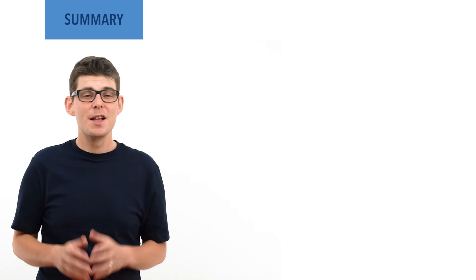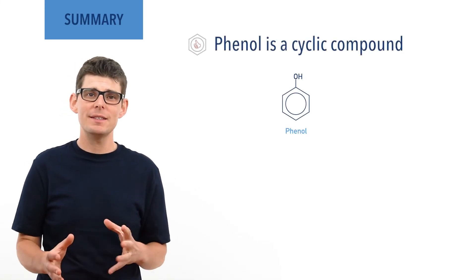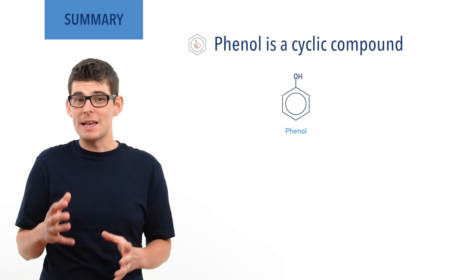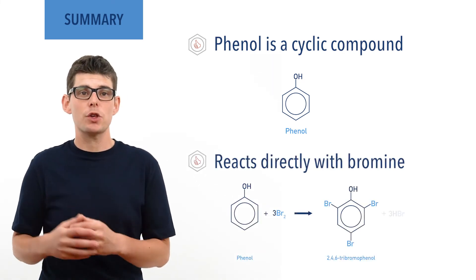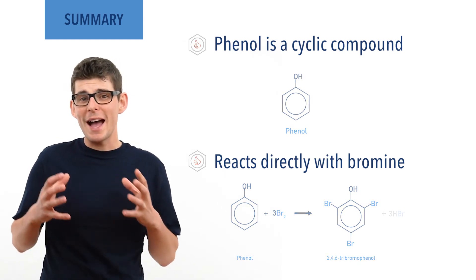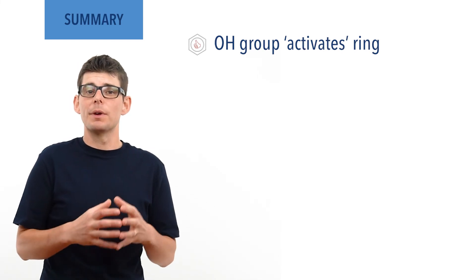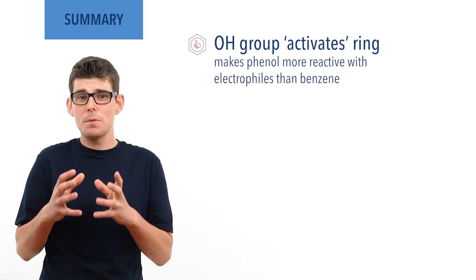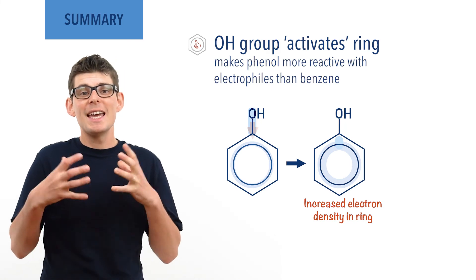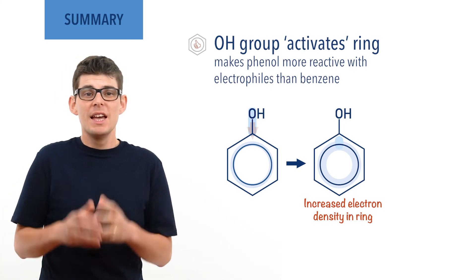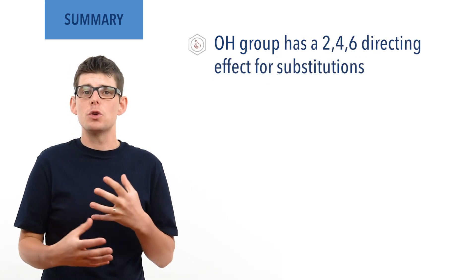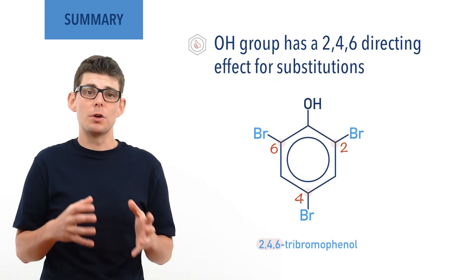To summarize: phenol is a cyclic compound with the formula C6H5OH — essentially a benzene ring with an OH group attached. Phenol is able to react directly with bromine in a bromination reaction, unlike benzene which needs a halogen carrier. The OH group in phenol activates the benzene ring and makes it more likely to react with electrophiles, as a lone pair of electrons on the oxygen atom spreads slightly into the delocalized electron system in the benzene ring, increasing the electron density. The OH group in phenol also has a 2,4,6 directing effect, meaning that as multiple substitutions of bromine occur, the final product is 2,4,6-tribromophenol.